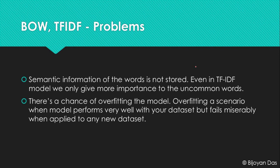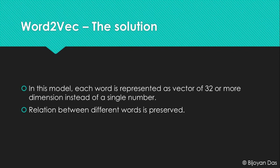In the Word2Vec model, we don't represent words as single numbers like we did in bag of words or TF-IDF. Instead, we represent words as vectors with a length of say 32, 100, or 300 dimensions. Each of these numbers in the vector corresponds to a specific context. Let's find out how words are represented.